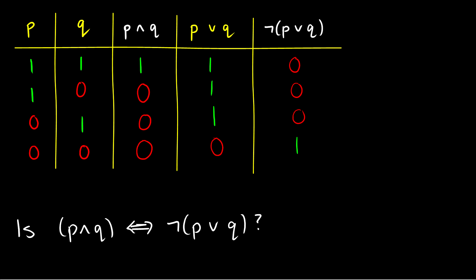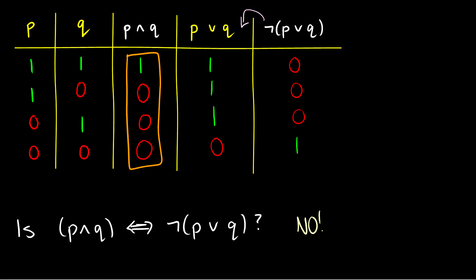We're just taking the negation of the previous column. So are P∧Q and ¬(P∨Q) logically equivalent? The answer is no. They are not equivalent because the truth conditions for P∧Q and the truth conditions for ¬(P∨Q) are not identical. Therefore, these are not logically equivalent.